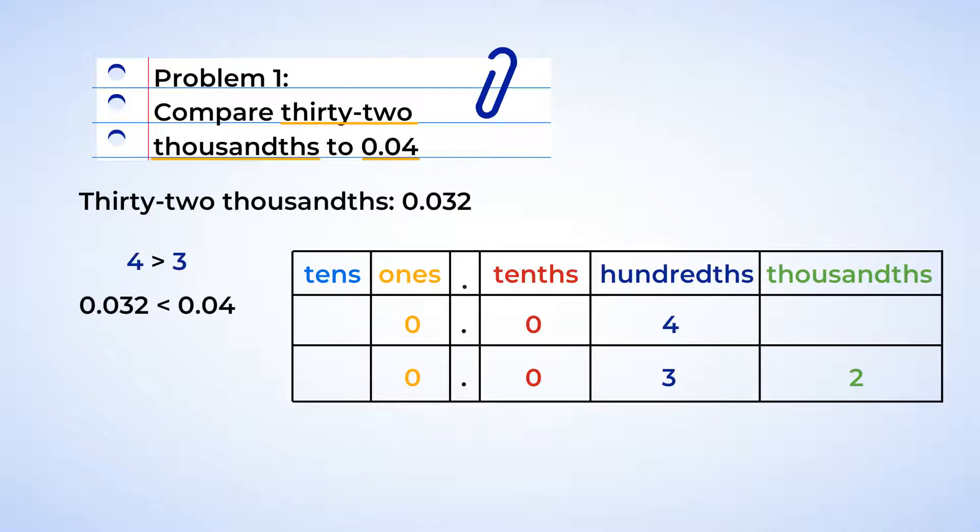And here I have another mighty clue for you. We can add zeros as placeholders to the end of numbers on the right of the decimal without changing the value of the decimal. And that means we could add a zero to zero point zero four to make zero point zero four zero. And now compare thirty-two thousandths to forty-thousandths to get the same answer. Zero point zero three two is less than zero point zero four zero. Neat.